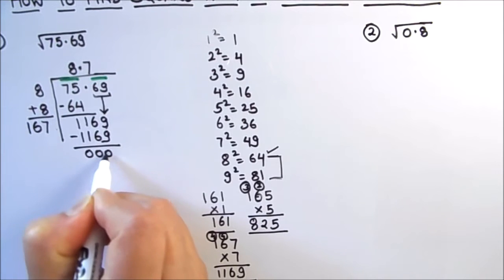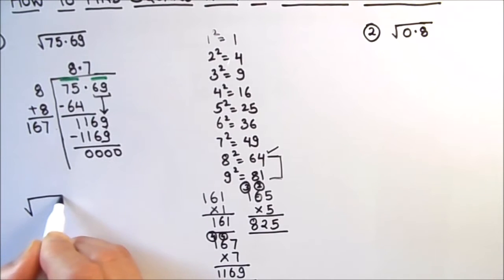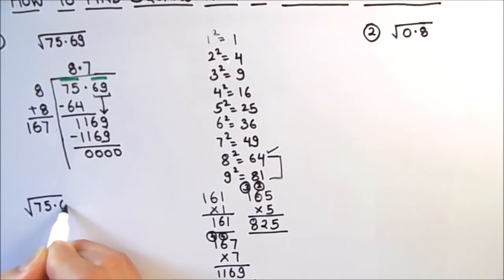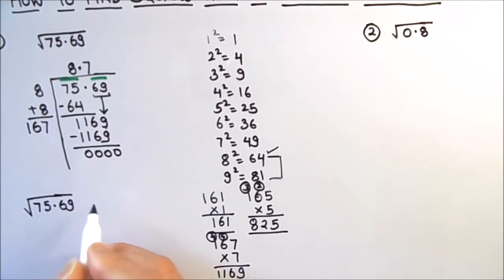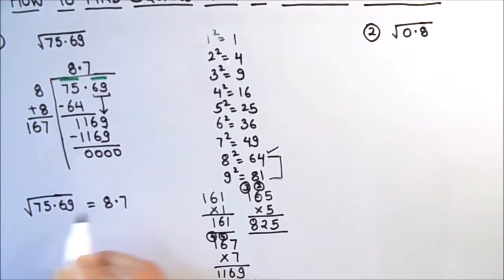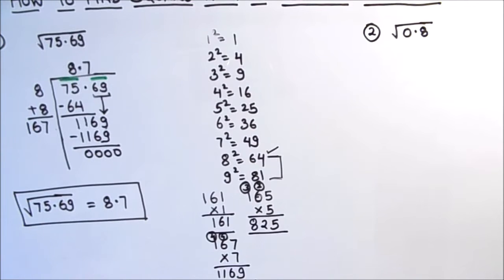We annex 7 to the divisor and 7 becomes our next quotient digit. We subtract 1169 from 1169 and the remainder is zero. The square root of 75.69 is 8.7. That is our final answer.